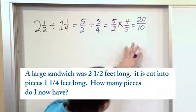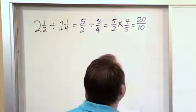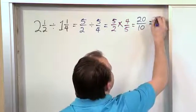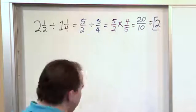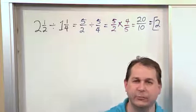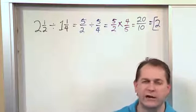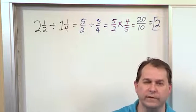But then you realize you can simplify this. Twenty over ten is the same as twenty divided by ten, which is two—it goes a whole number of times. So what this is saying is if I actually did have a sandwich 2½ feet long and I was trying to cut it into pieces 1¼ feet long,